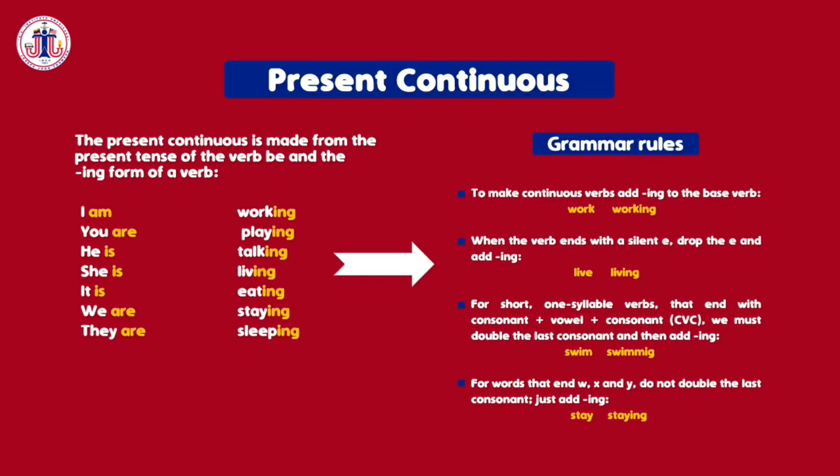Here we have some grammar rules. To make continuous verbs, add -ing to the base of the verb. For example, the verb 'work' — you only have to add -ing at the end. When the verb ends with a silent 'e', drop the 'e' and add -ing. For example, the verb 'leave'.